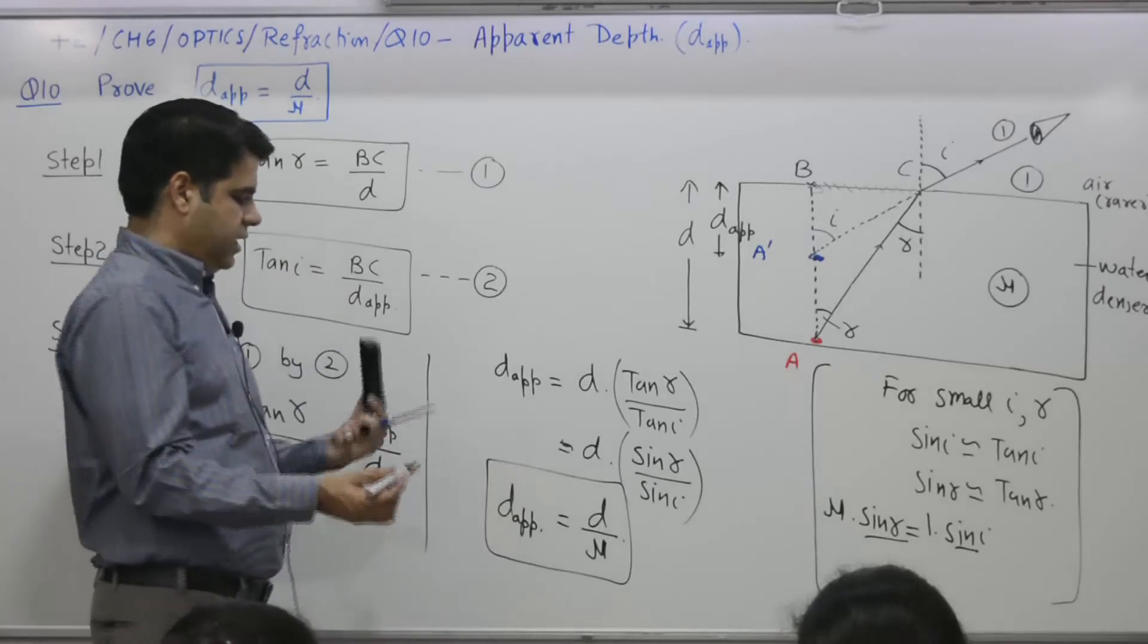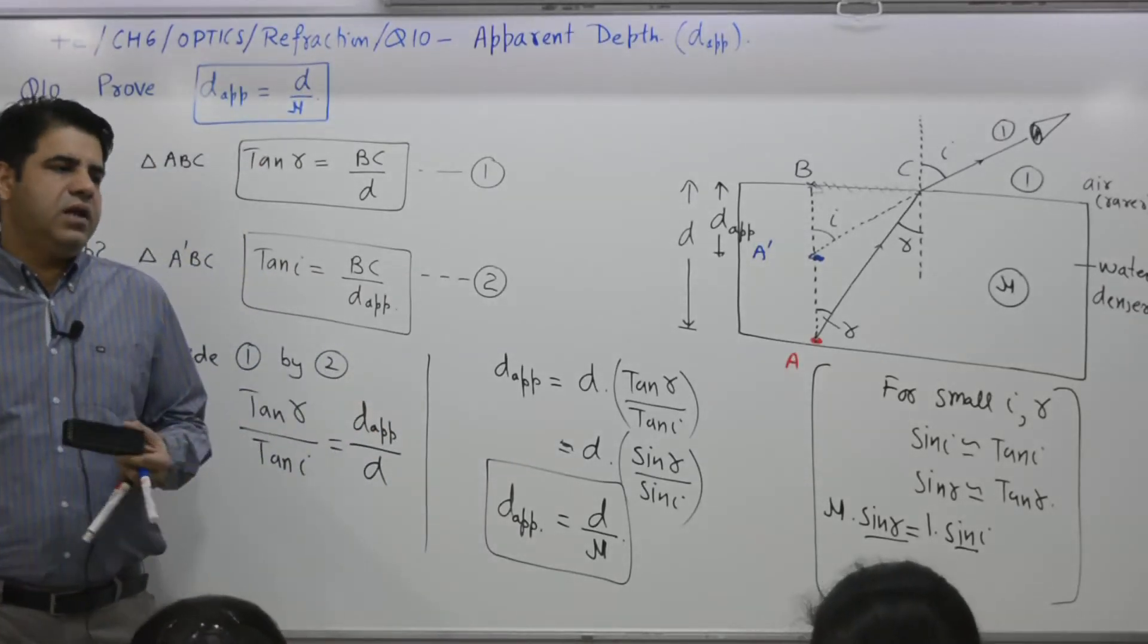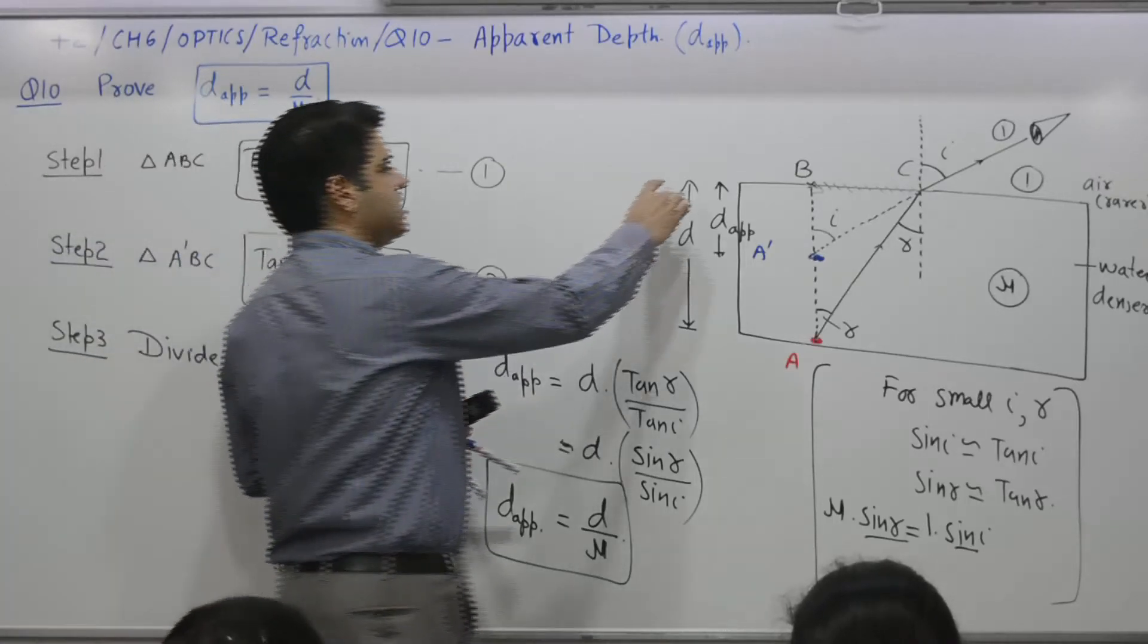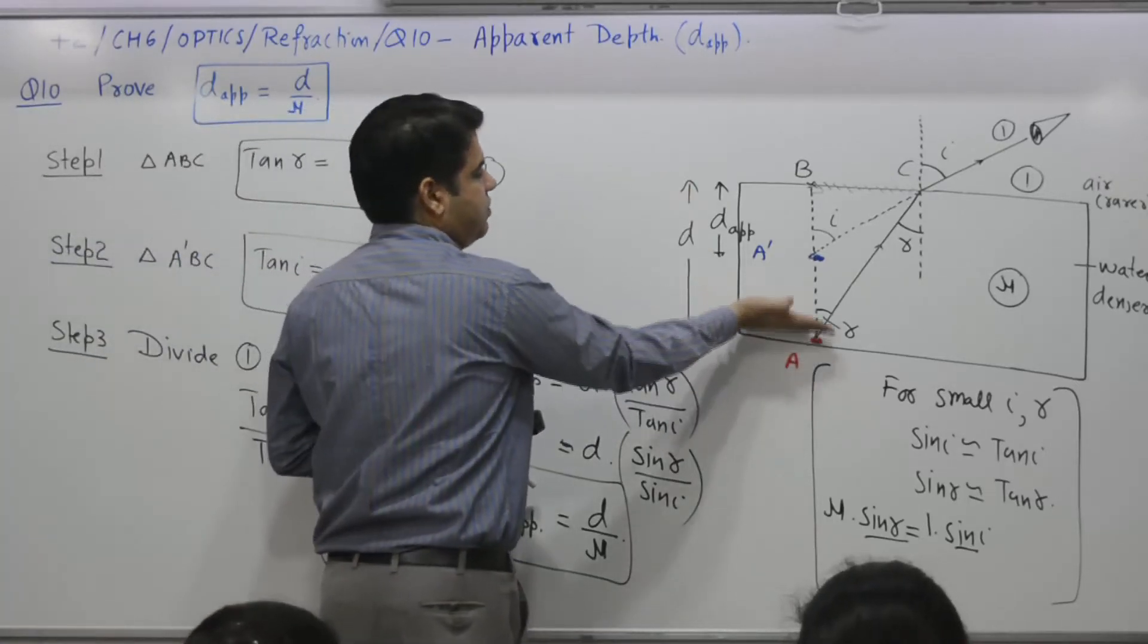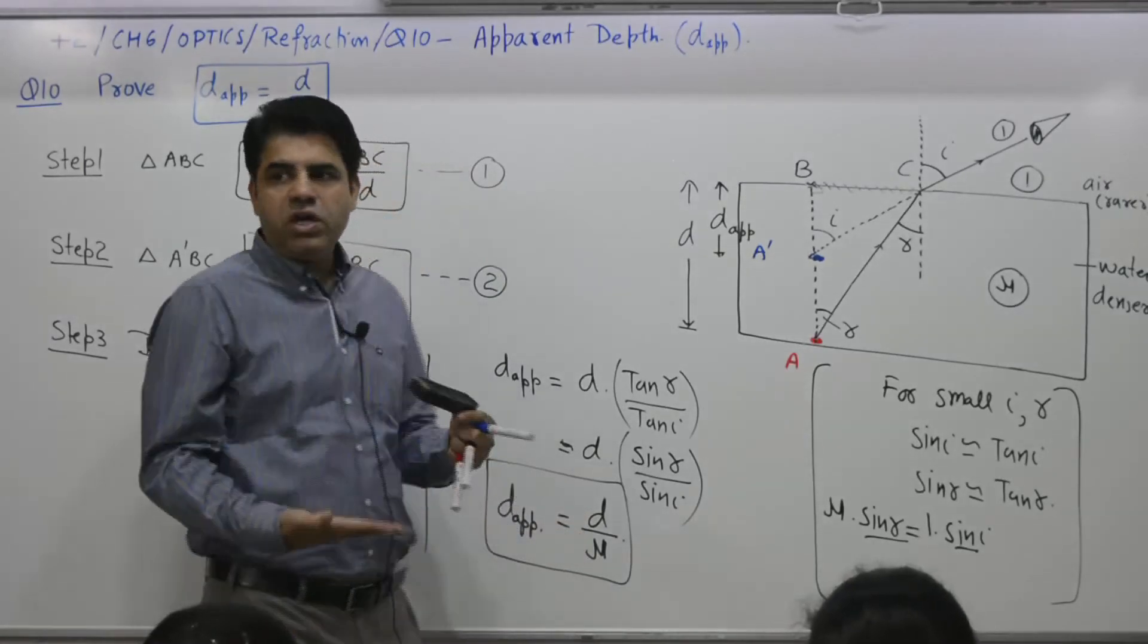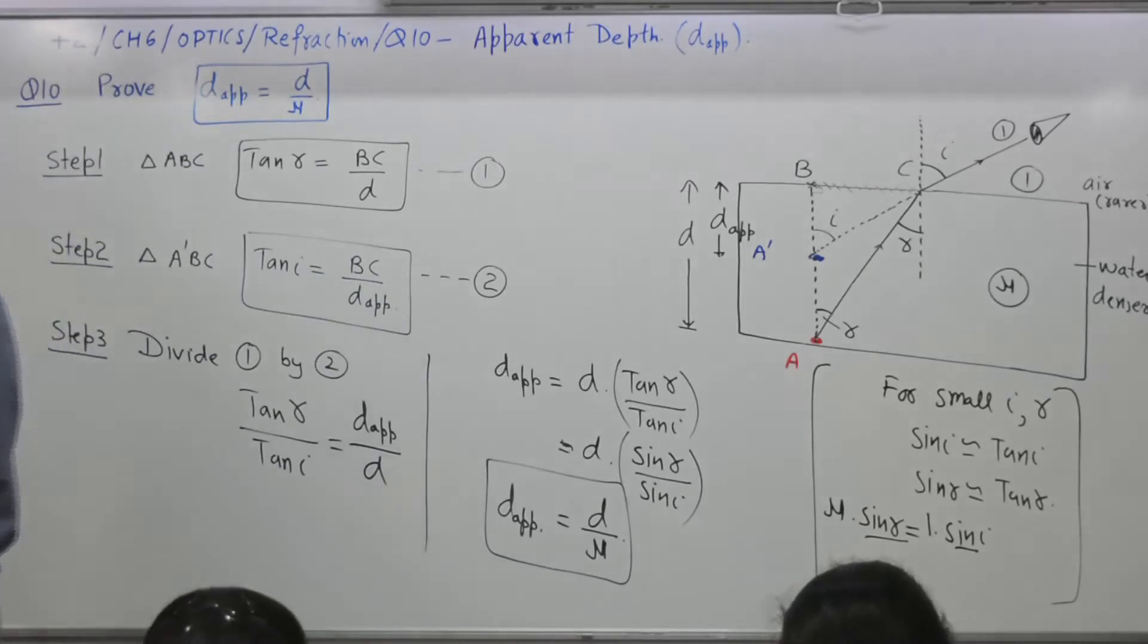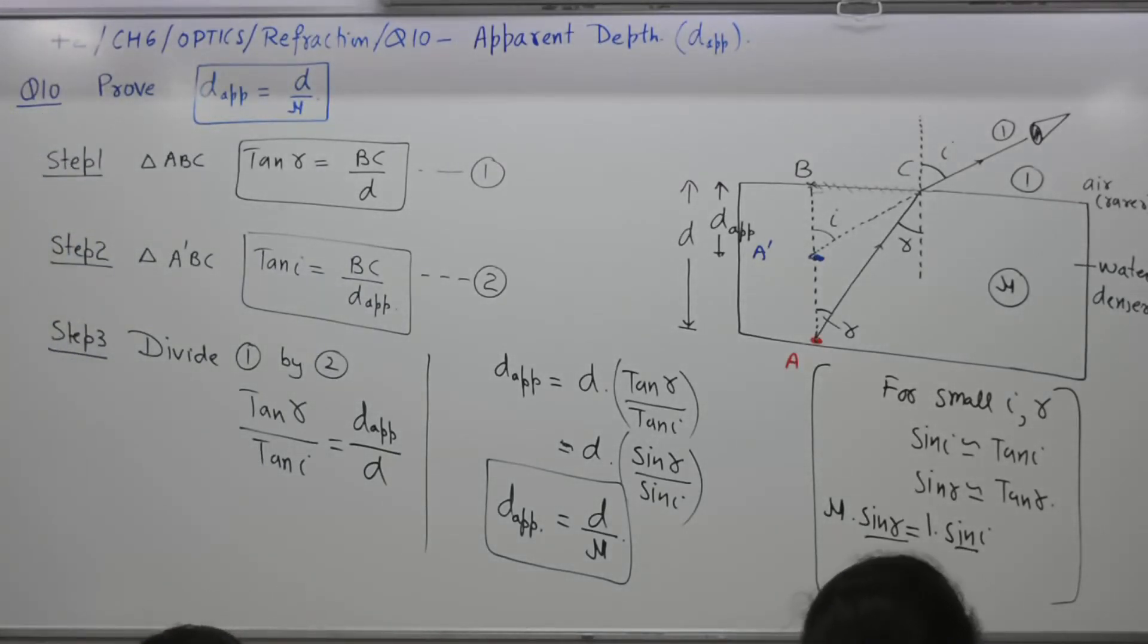So D apparent is equal to D by nu. If nu is 2, suppose for material nu is 2, if this is 10 cm it appears to be at what distance? 5. 10 divided by 2, the coin will appear to be at 5. 4 minutes to write.